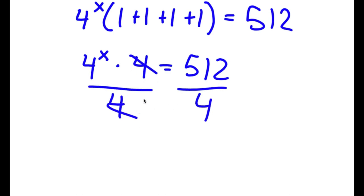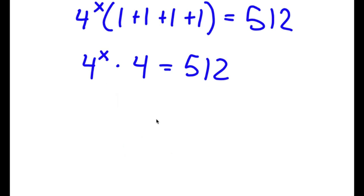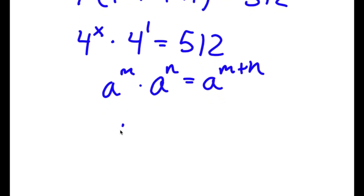Instead of dividing both sides by 4, I'm going to multiply these two using the exponent rule: a to the power of m times a to the power of n equals a to the power of m plus n. So 4 to the power of x times 4 to the power of 1 equals 4 to the power of x plus 1, which is equal to 512.